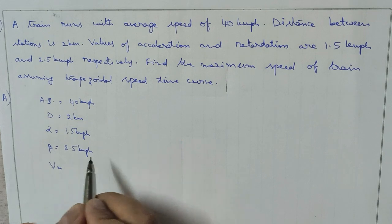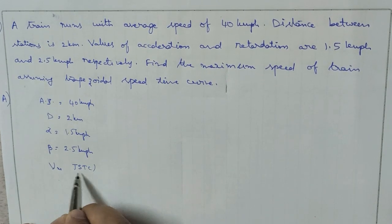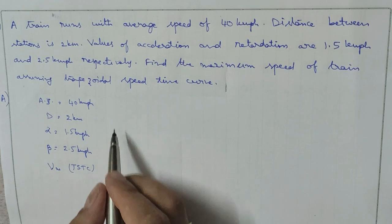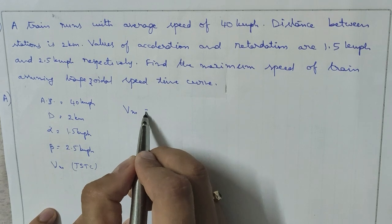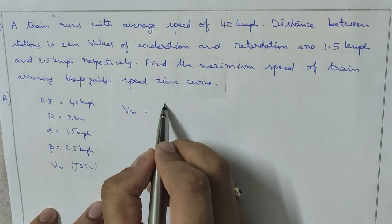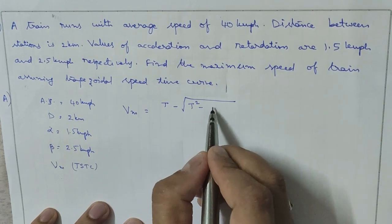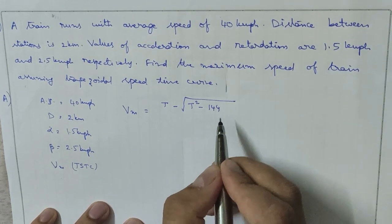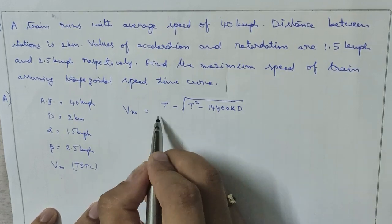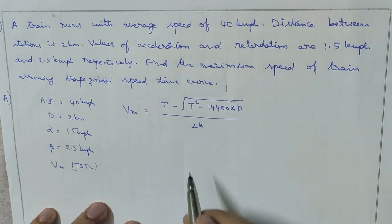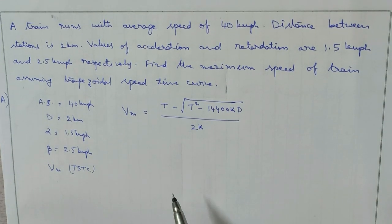We need to find the maximum speed Vm assuming a trapezoidal speed-time curve. The direct formula is: Vm = [T − √(T² − 14400·K·D)] / (2K), where T is the actual time of run.